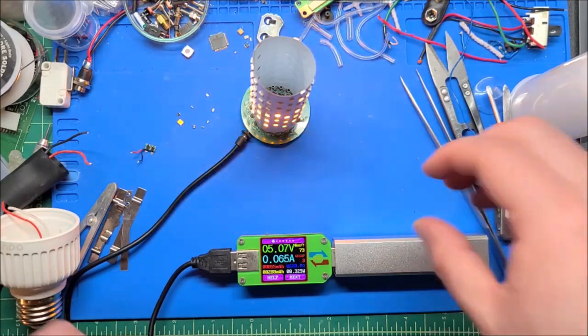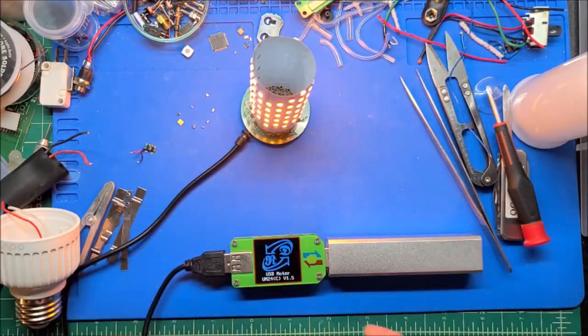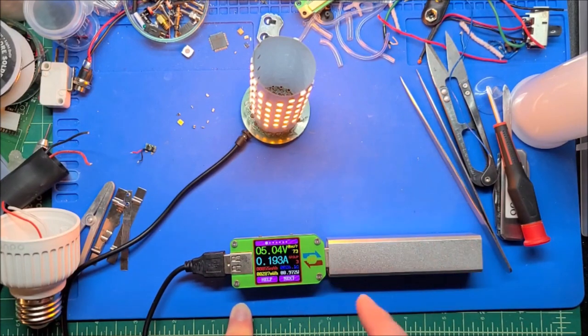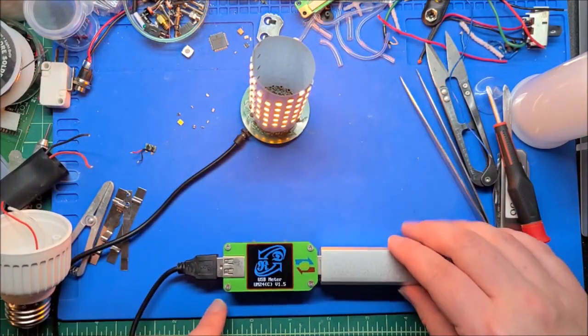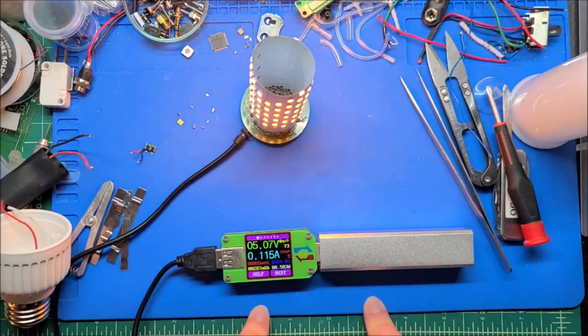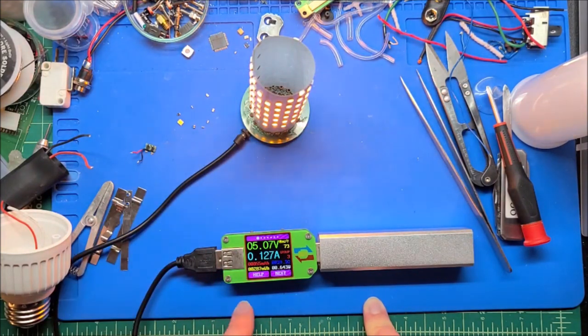It's looking like if I toggle this, solidly lit is just under 200 milliamps and fading will obviously ramp up and down.